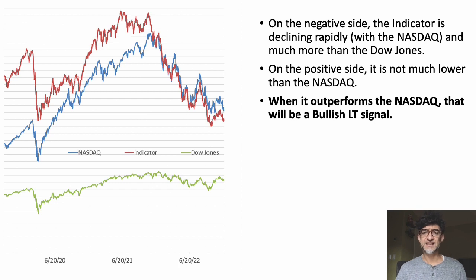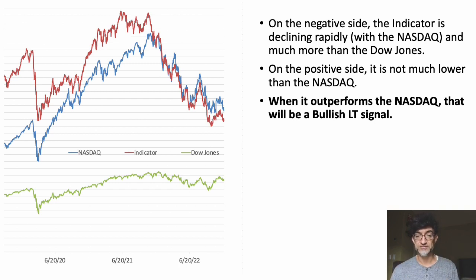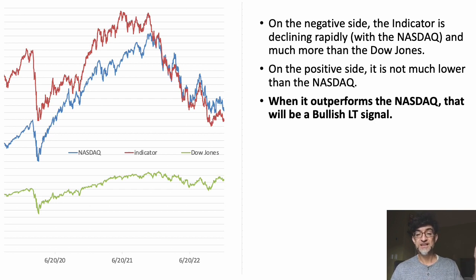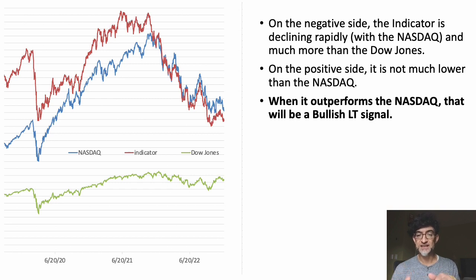On the negative side, the indicator is currently declining rapidly. This is the current period. It's declining with the market, but at least it's not declining more than the market. We've had a tech bubble because of the liquidity crisis, analogous to the bubble at the market top in 2000. The good sign is the indicator is not declining ahead of the market like it did before the tech wreck. However, I still want to see it outperform the market before it gives a strong bullish signal — that red line needs to either stay flat while the market declines, or increase rapidly.